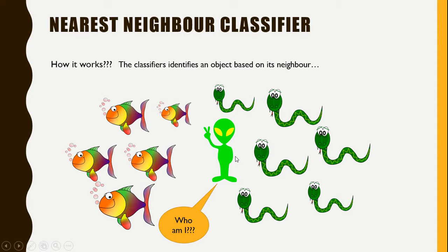Let's start by looking at its nearest neighbor. If I look at its nearest neighbor, it turns out to be a snake. Based on that, I might think that since its nearest neighbor is a snake, it is also probably a snake.